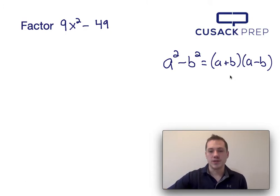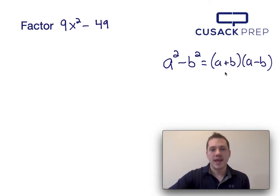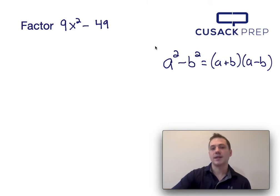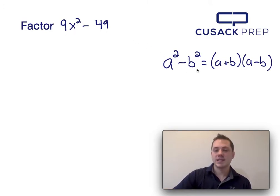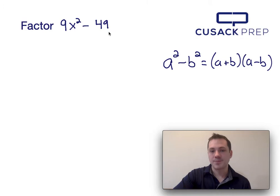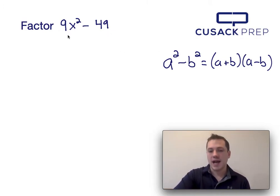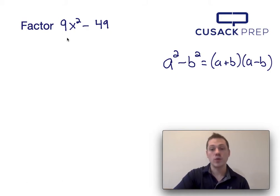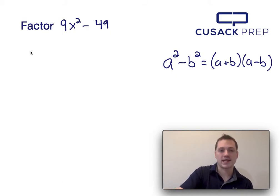When using the difference of squares equation, I need to recognize that a squared is the same as 9x squared and b squared is the same as 49. So if a squared is equal to 9x squared, I can figure out what a is by taking the square root of 9x squared.